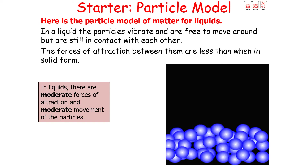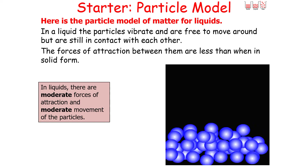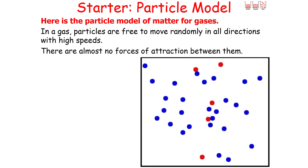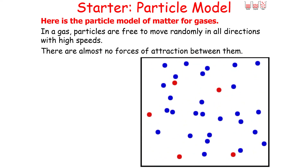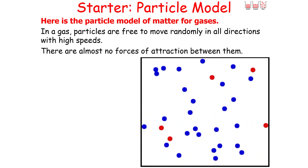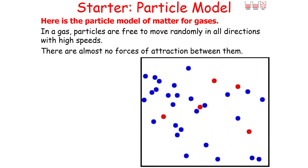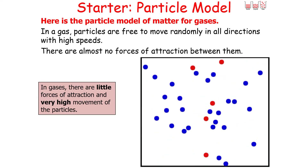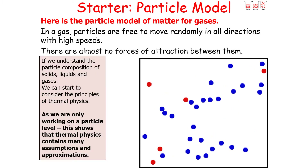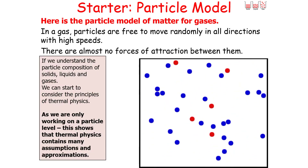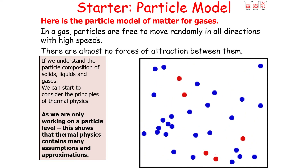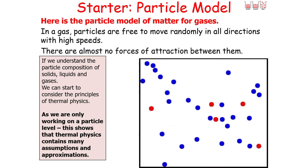In liquids, there are moderate forces of attraction and moderate movement of the particles. In the particle model for gases, the gas particles are free to move randomly in all directions with high speeds, and there are almost no forces of attraction between them. So in gases, there are very little forces of attraction and very high movement of particles. If we understand the particle composition of solids, liquids, and gases, we can start to consider the principles of thermal physics.